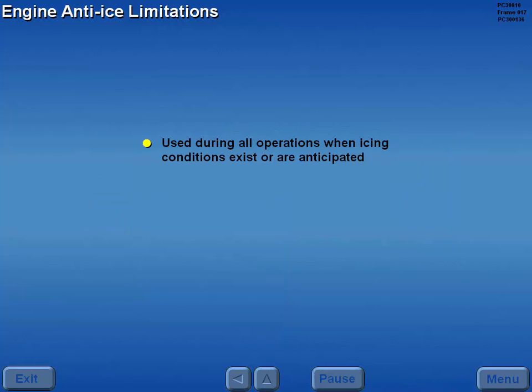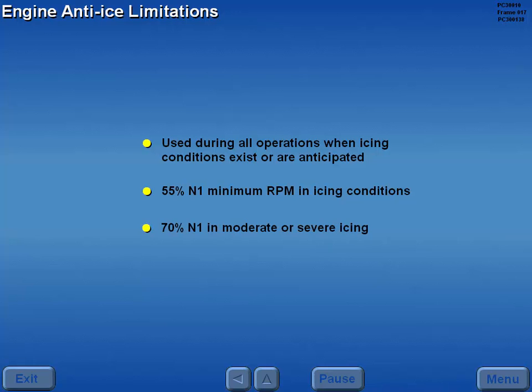Engine anti-ice should be used during all ground and flight operations when icing conditions exist or are anticipated. The minimum engine RPM for flight operations in icing conditions is 55% N1, and 70% N1 in moderate or severe icing.